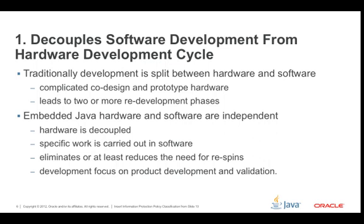Traditionally, when looking at the development cycle for Java with hardware and software, you would find an almost waterfall effect — hardware development, then a prototype, then some software, more hardware, more software — a constant cycle that could lead to two or more redevelopment phases. But with embedded Java, the hardware and software are really independent. Because the hardware is decoupled, it allows specific work to be carried out within the software environment, breaking that waterfall cycle.